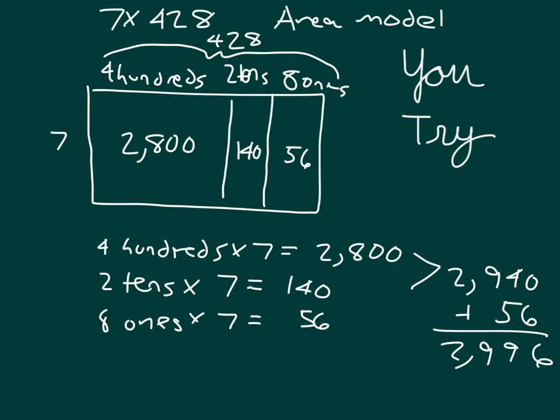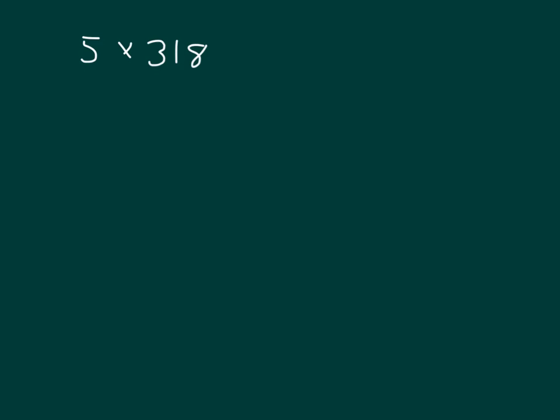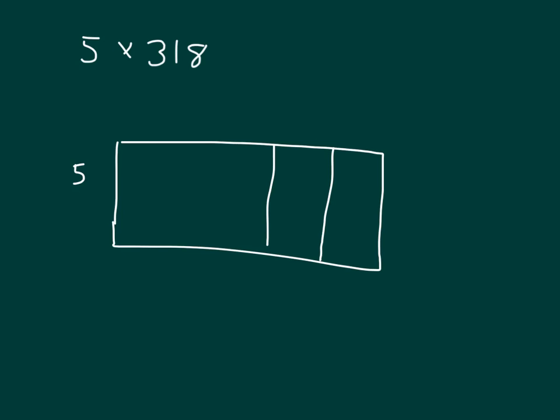Look over your area model. Let me show you one last example with the area model. We'll go five times three hundred eighteen. This time, we'll go ahead and break apart three hundred eighteen into its hundreds, the tens, and then the ones. In this case, that's three hundred, ten, eight. Notice that I wrote it out a different way this time.